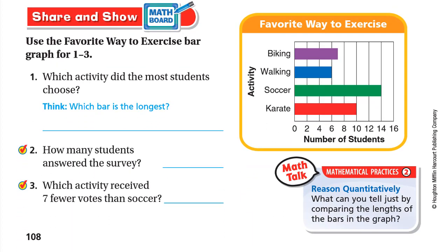Let's go to Share and Show. Use the 'Favorite Way to Exercise' bar graph. The activities are biking, walking, soccer, and karate. Which activity did the most students choose? It's the longest bar, which is soccer — most students like soccer.